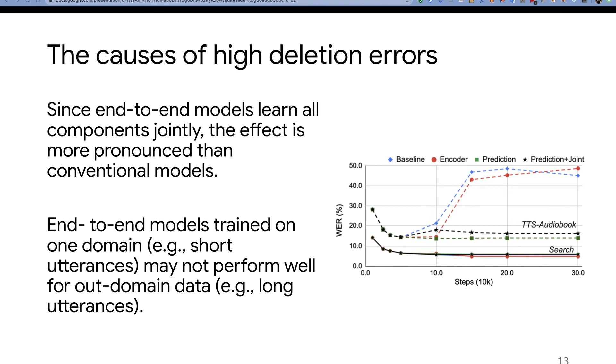To analyze further, we look at the word error rate in domain - in this case, search - and then test it for out-of-domain data, in this case, audiobooks. The picture on the right shows that if we freeze the encoder, the generalization errors will become lower with more steps. However, if we do not freeze the encoder and keep updating its parameters, we can see after 10k steps, the word error rate goes very high.